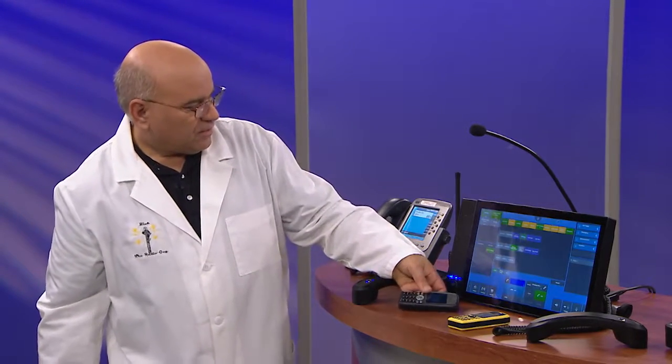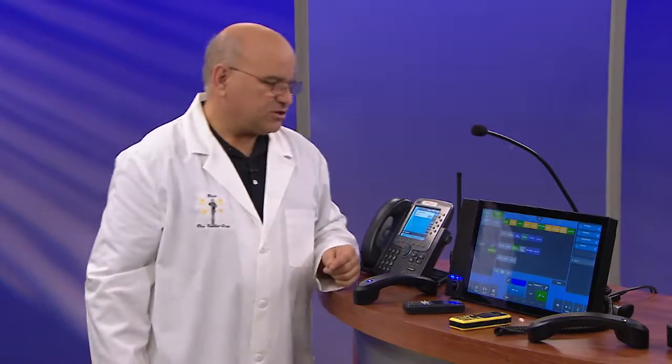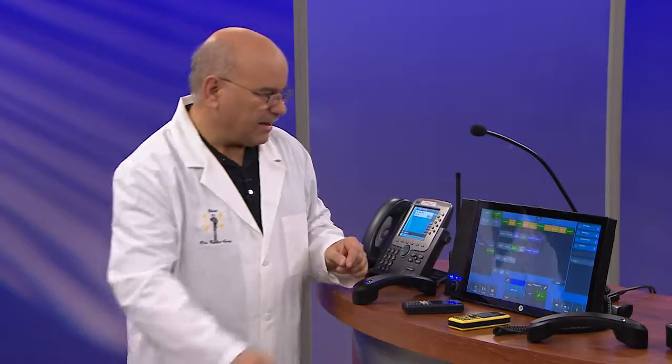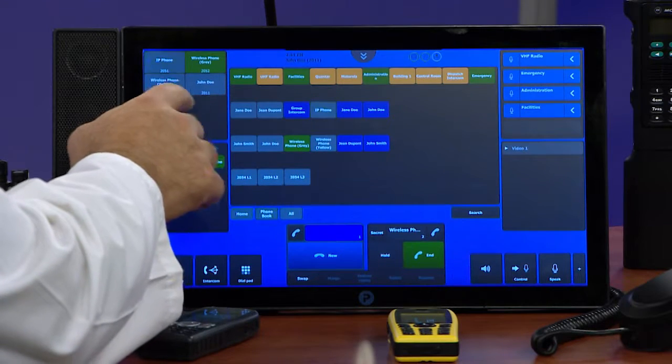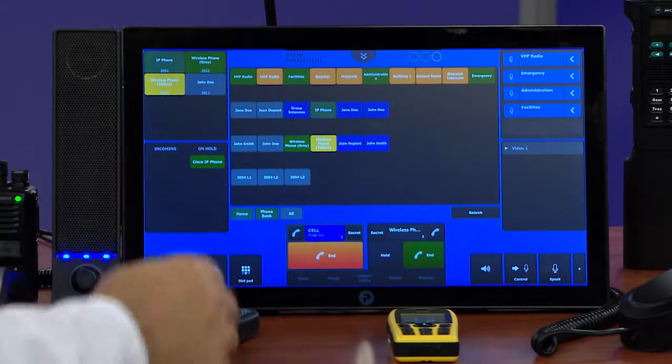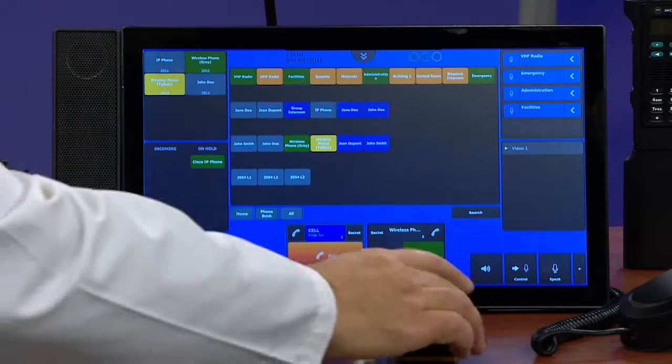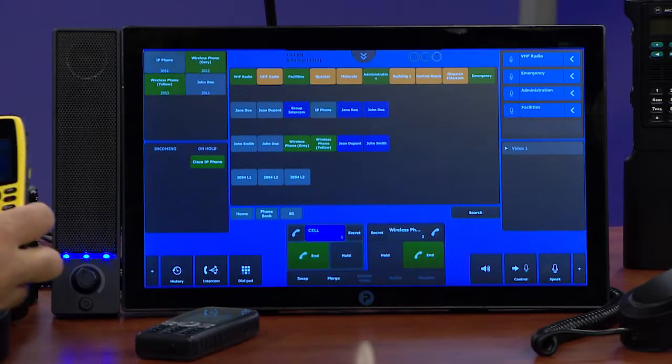And that's going to come down here to the other handset. A couple other things that I can do is I can actually take these calls and maybe even add more. Let's say I want to make a call out to the yellow phone here. One touch dial that. Answer that call.